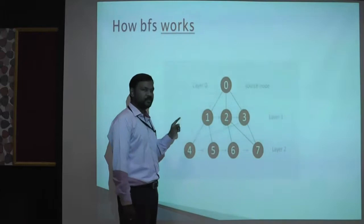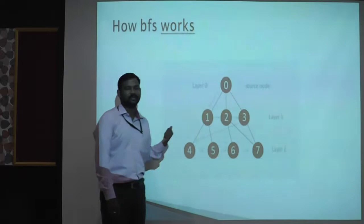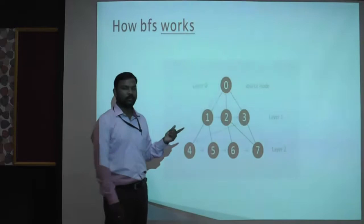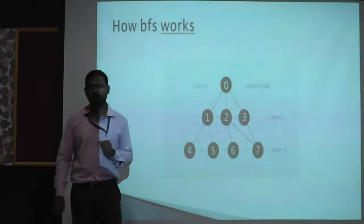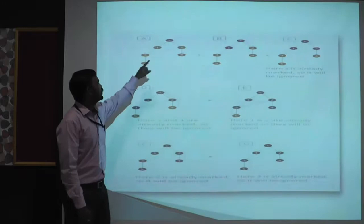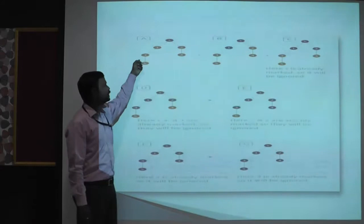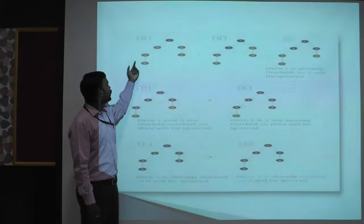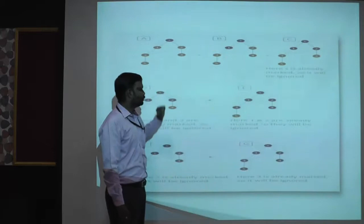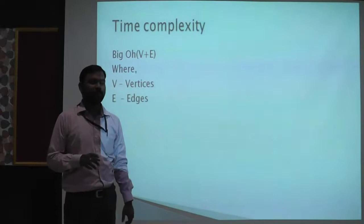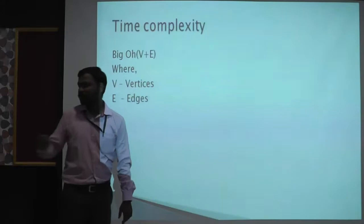In depth-first search, in each iteration you are going to process only two nodes at any instance. So the memory consumption in depth-first search is better, but if there is an infinite loop, depth-first search will not provide an optimal solution, whereas breadth-first search will. Consider this example: initially it processes the root node, then goes to one and two. One and two have a child called three and four, so in the next step it processes three and four. After that there is another child called five, so it processes five. The complexity is the same compared to both searches, but the difference is only in memory optimization and time complexity.